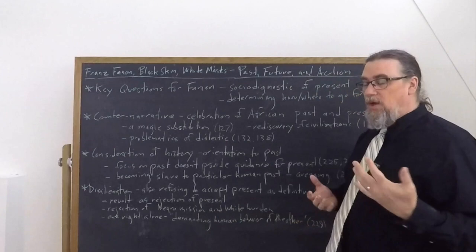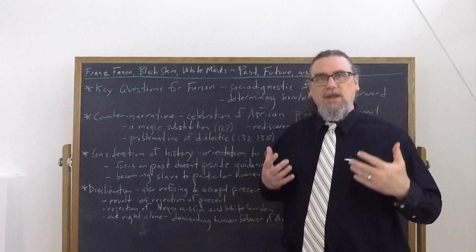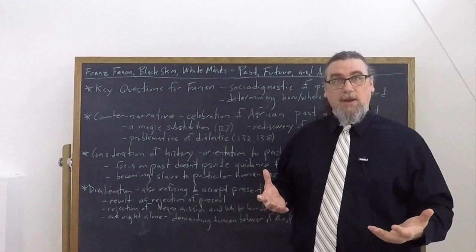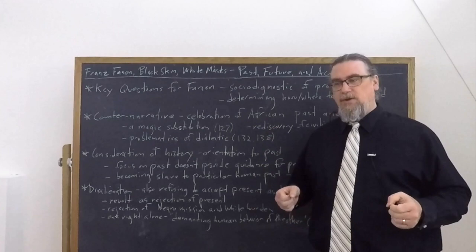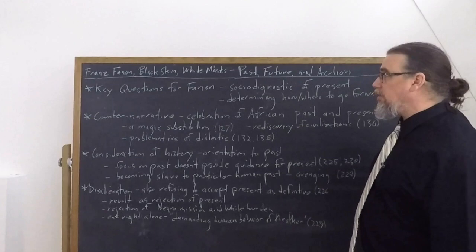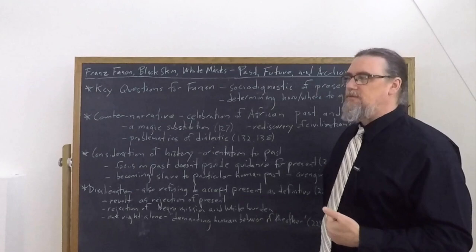And then the other key aspect of this work is determining how and where to move forward, how to get out of the dilemmas and double or triple binds that have been imposed upon both black and white subjects and people who find themselves kind of in between, like him and his fellow Antillians, within a world that has been determined by colonialism, racism, economic exploitation, an entire history. How do you move forward? How do you go into the future? How do you orient yourself towards the future without becoming, as he's called it, a slave of the past?